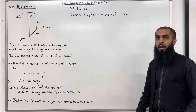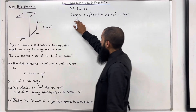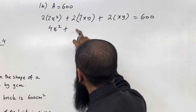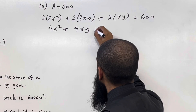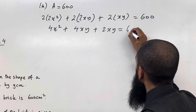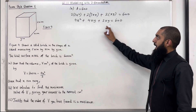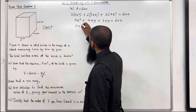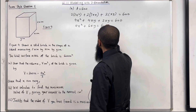But we have two lots of this face — the top and the bottom. So two lots of xy. This is the surface area A, and it equals 600. Now I'm going to simplify this. The first term becomes 4x squared, plus the second term becomes 4xy, plus the third term becomes 2xy, equal 600. Collecting like terms: 4x squared plus 6xy equals 600.